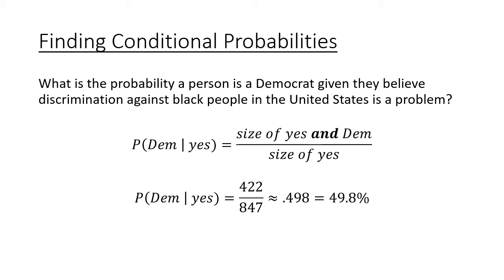So the probability of being a Democrat given they said yes is 422 divided by 847, which gives 0.498, or 49.8%. That means if you know a person believes discrimination is a problem, there is roughly a 50-50 chance that they are a Democrat.